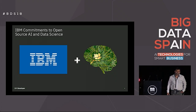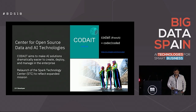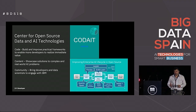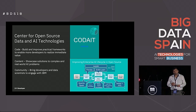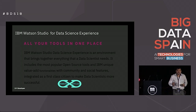IBM has been investing a lot in open source and data science. Our group was previously called STC, the Spark Technology Center, but it's been renamed to Codec, where we do a bunch of projects around Spark, data science, and TensorFlow. We also created a model asset exchange containing models which are very helpful for real-life applications. IBM has created software as well as infrastructure for all data scientists.